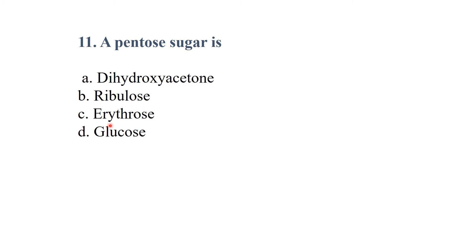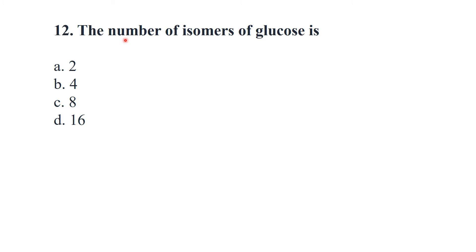A pentose sugar is — options: dihydroxyacetone, ribulose, erythrose, or glucose. The answer is ribulose — ribulose is a pentose sugar.